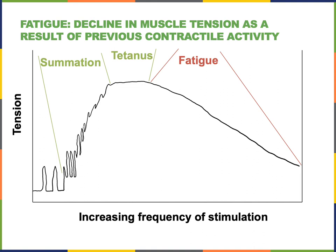When an action potential spreads through a muscle fiber, it stimulates a single all-or-nothing response known as a twitch. But when a muscle is stimulated at high frequency, twitches can overlap, leading to summation — an increase in tension with increasing frequency of stimulation.